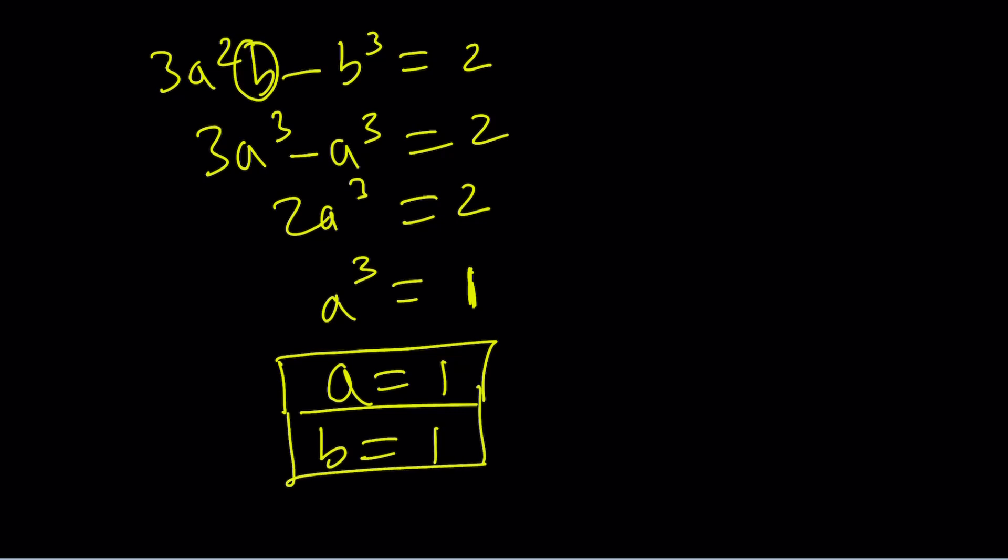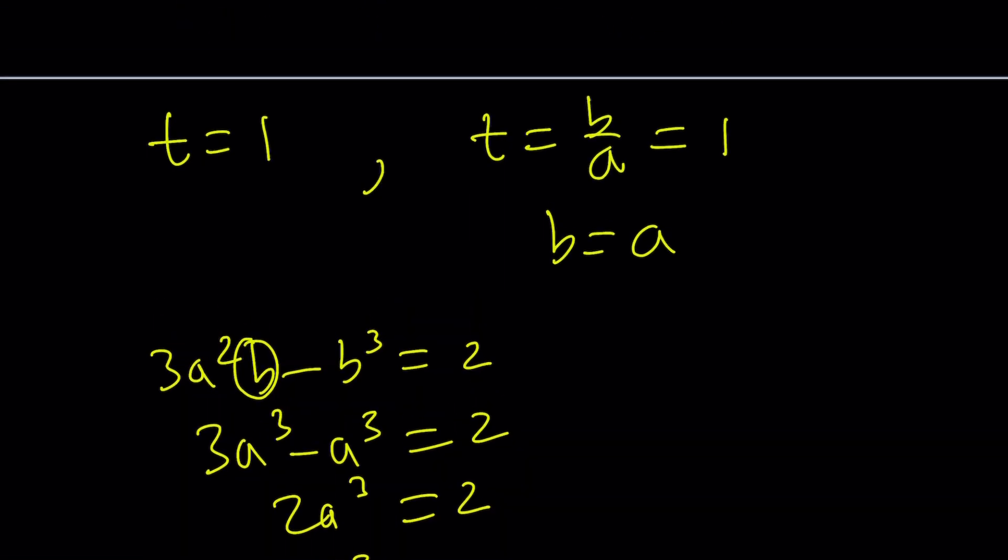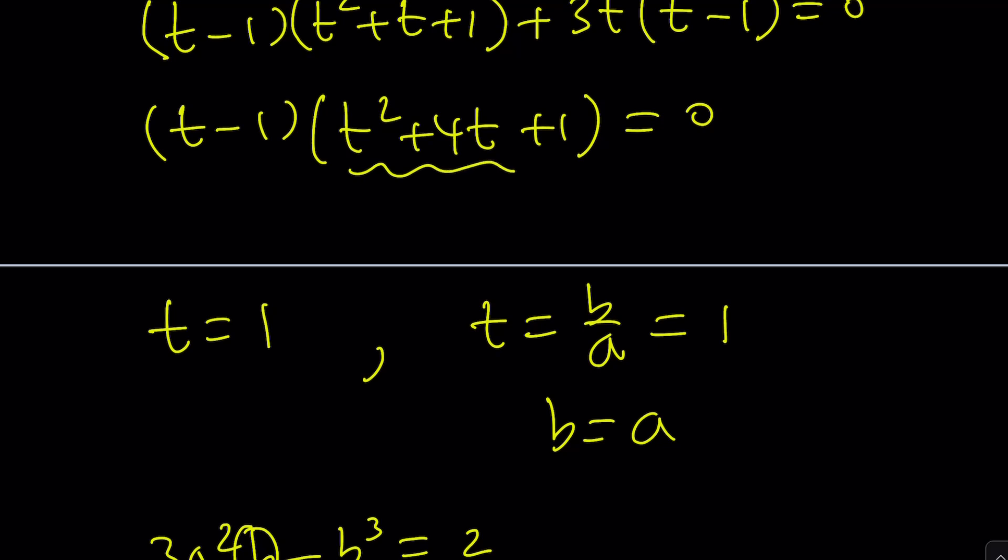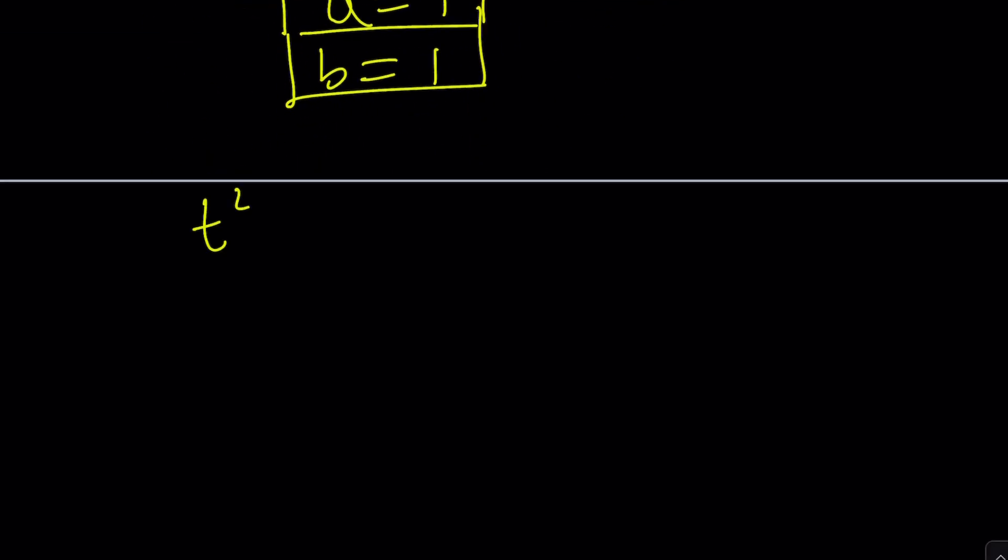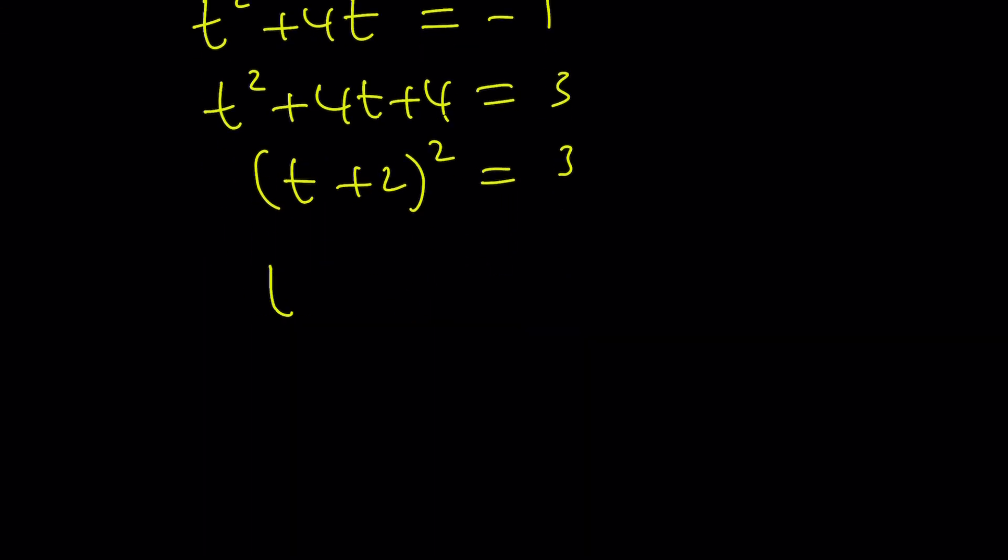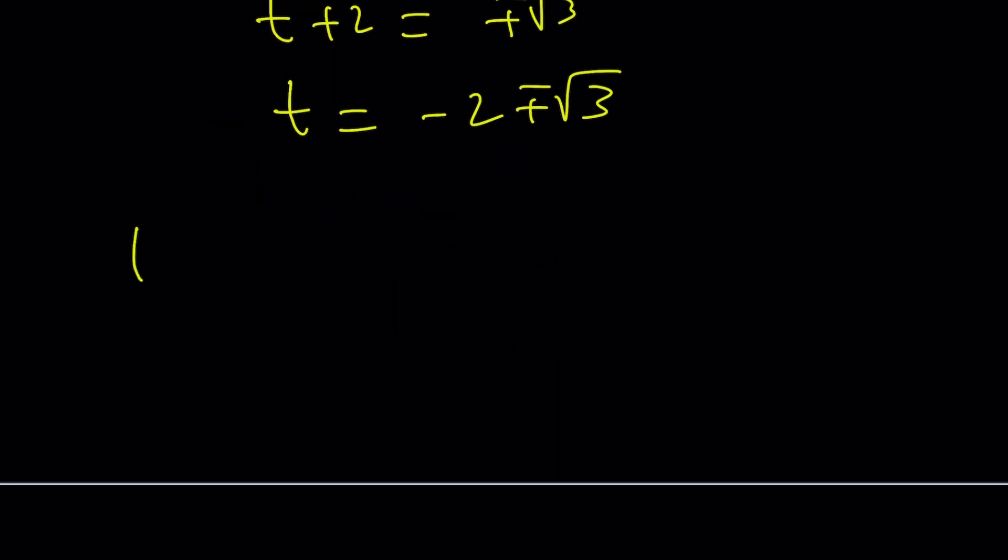That comes from t = 1. But there are two more values from the quadratic t² + 4t + 1 = 0. Completing the square: (t + 2)² = 3, so t = -2 ± √3. You can plug these in to find other solutions. I want to talk about the second method, which in my opinion is very cool.